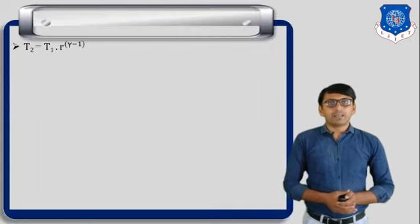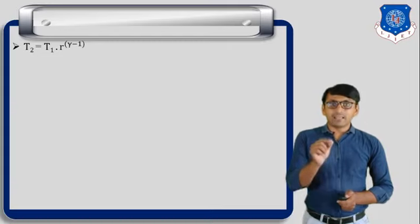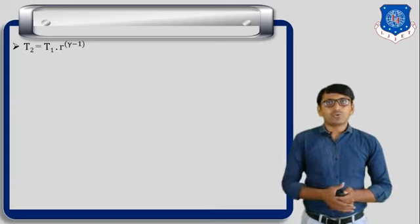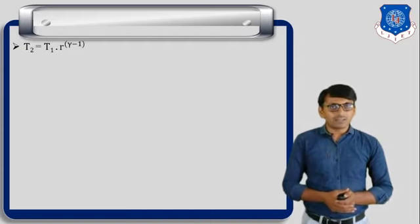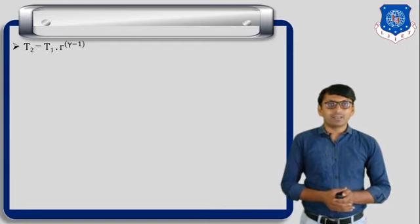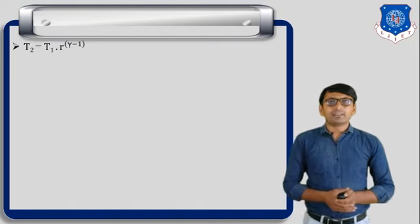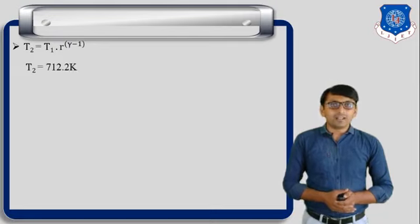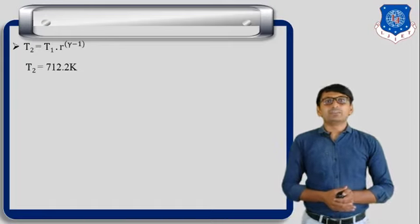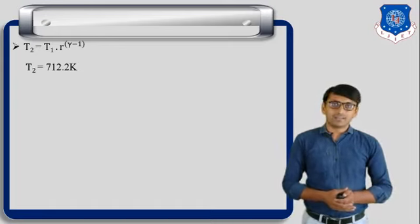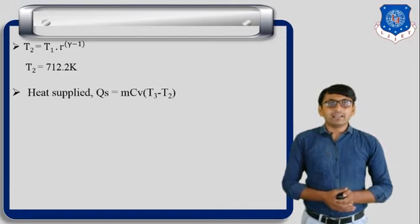First step: process 1-2 is an adiabatic process. We know that T2 by T1 is equal to (V1 by V2) raised to gamma minus 1, and V1 by V2 equals R. So T2 equals T1 into R raised to gamma minus 1. Putting in the values of T1 and R, we get T2 equal to 712.2 Kelvin.